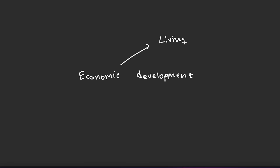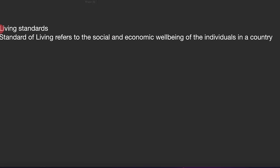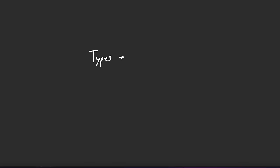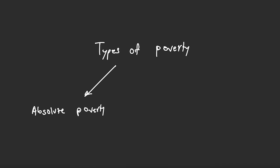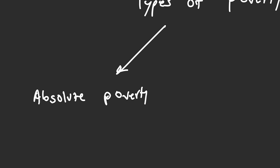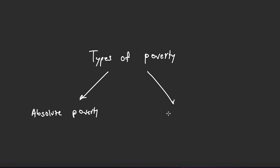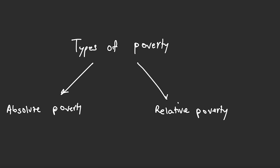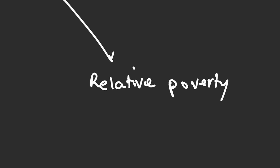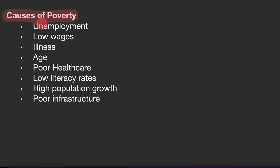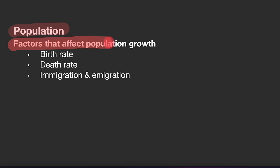Moving on to economic development: living standards refer to the social and economic well-being of an individual in a country. GDP is the main measure of the total value of all goods and services produced in a given period. With poverty, there are two types: absolute poverty, which refers to people living below a certain income threshold or unable to afford basic goods and services, and relative poverty, which measures the extent to which a household's financial resources fall below an average income level. Causes of poverty include unemployment, low wages, illness, age, poor healthcare, low literacy rates, high population growth, and poor infrastructure.